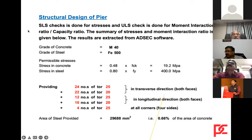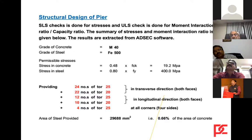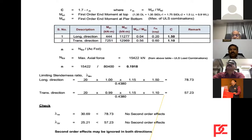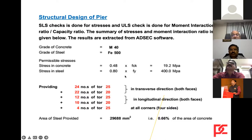The structural design of the pier: SLS checks are done for stresses and ULS checks for moment interaction ratio. Results are extracted from ADSEC software. For this 3 m × 1.5 m pier, the reinforcement used is 24 bars of T25, 22 bars of T20, and 12 bars of T25, giving a total area of 29,688 mm², which is 0.66% of the concrete area. In IRC, the minimum percentage of steel is about 0.3–0.4%, much less than the IS456 building code minimum of 0.8%.